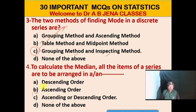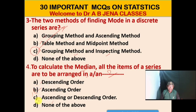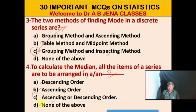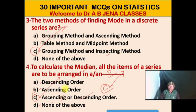Next MCQ: To calculate the median, all the items of a series are to be arranged in what order? A. Descending order. B. Ascending order. C. Ascending or descending order. D. None of the above. C is the right option. To calculate the median, all items of a series are to be arranged in ascending order as well as descending order.